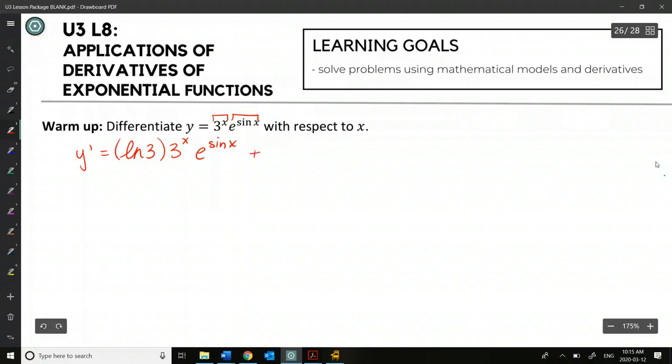Yeah, so then it's plus 3x to the e of sin x times cos x. Perfect. And then times 1. Yes, technically we do take the derivative of the inside of x, so we don't have to write that, but if you want to, that's fine. And then I think we have a common 3 to the x, e to the sin x, so let's just remove that. And we'll be left with the ln of 3 plus cos x.